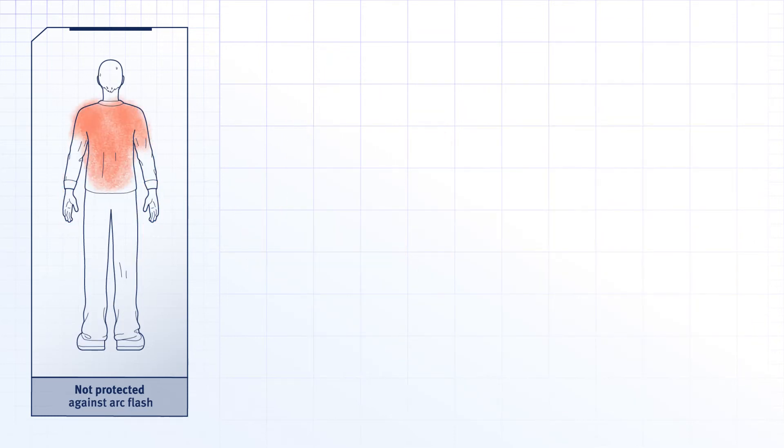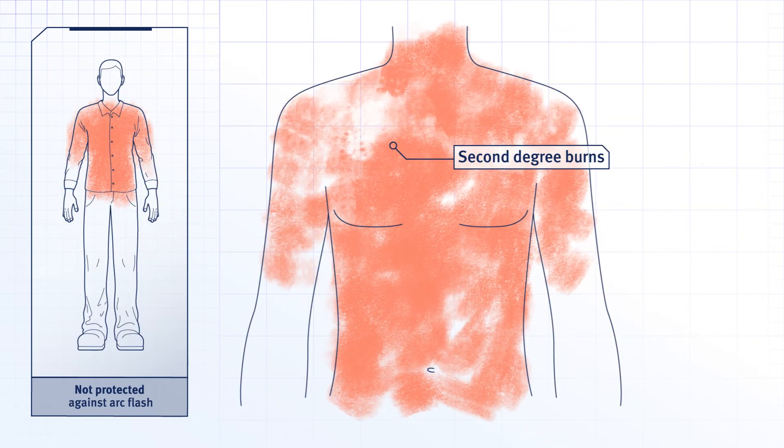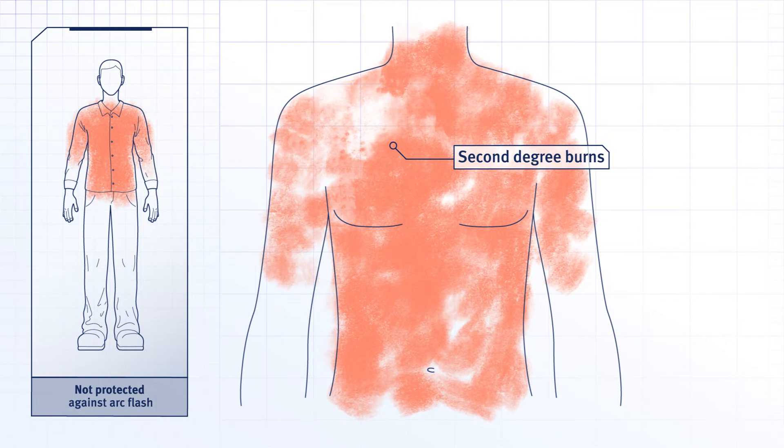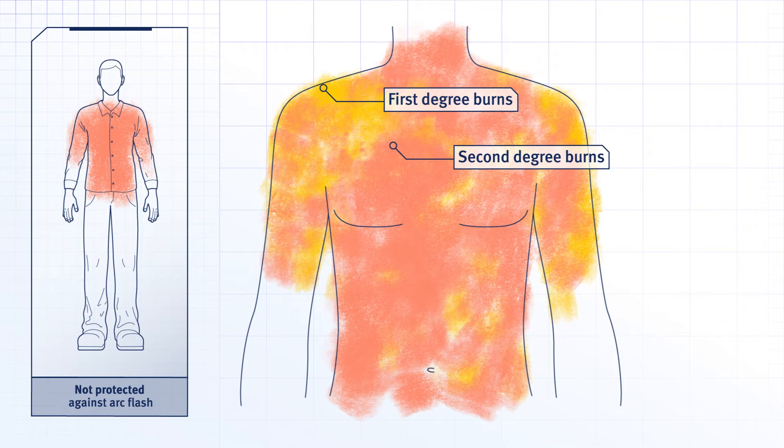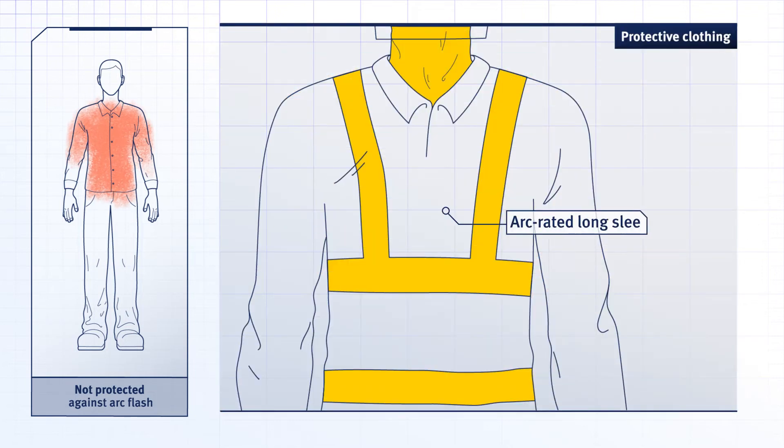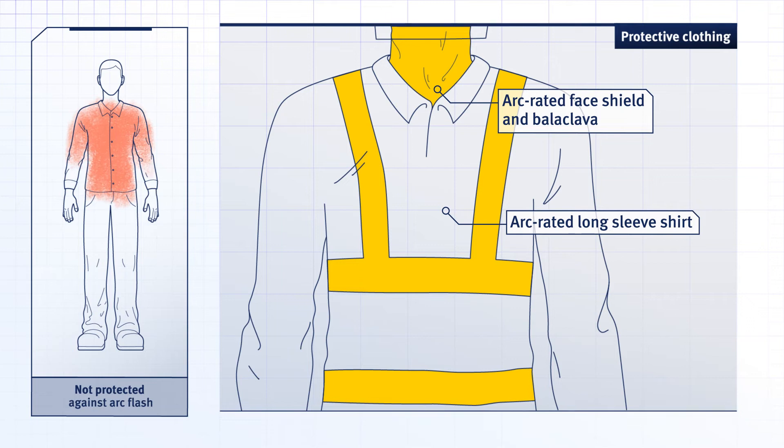Your front and back were badly burnt, with second degree burns across your chest from the initial blast, as well as a patchwork of first and second degree burns where your shirt caught fire. If you had been wearing the correct arc-rated protective clothing, it could have prevented the arc flash from setting your clothes on fire.